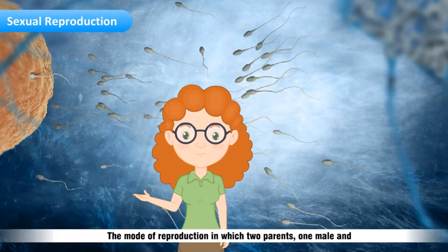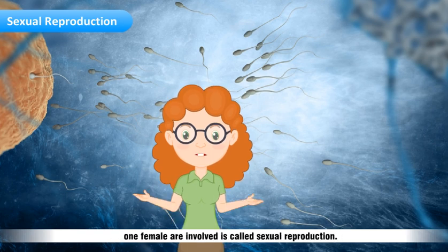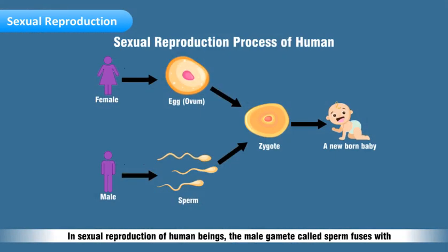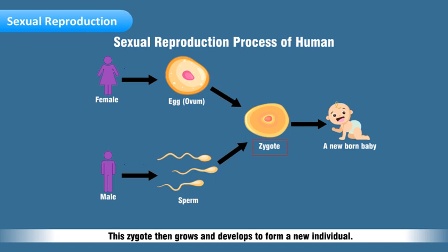Sexual reproduction is the mode of reproduction in which two parents, one male and one female, are involved. In sexual reproduction of human beings, the male gamete called sperm fuses with the female gamete called ovum and forms a new cell called zygote. This zygote then grows and develops to form a new individual.